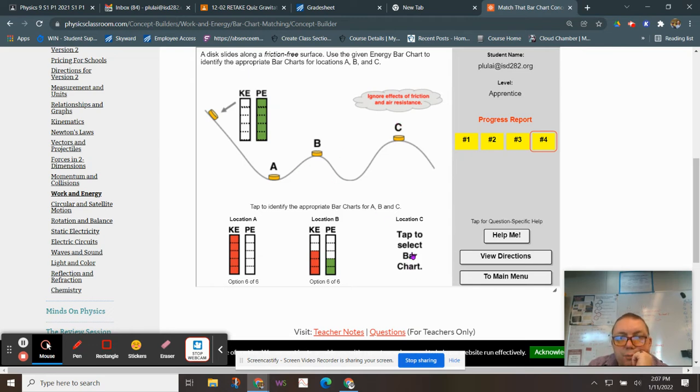So now we'll check C. So C is higher than B, so it should have more gravitational energy, or more PE. So here they have two bars of gravitational potential energy. Here we better have more than two. We're higher up.